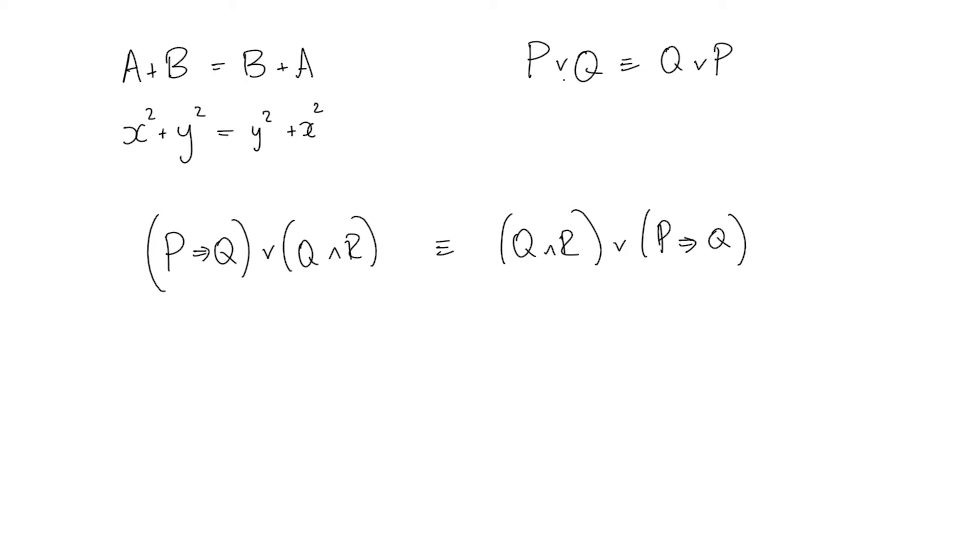Which is to say that p or q is equivalent to q or p. So whatever formulae I substitute, as long as I substitute them consistently, what I get as the output will be another equivalence. So if I substitute p for p implies q, as long as I do that consistently, and I substitute q for q and r, and as long as I'm consistent,